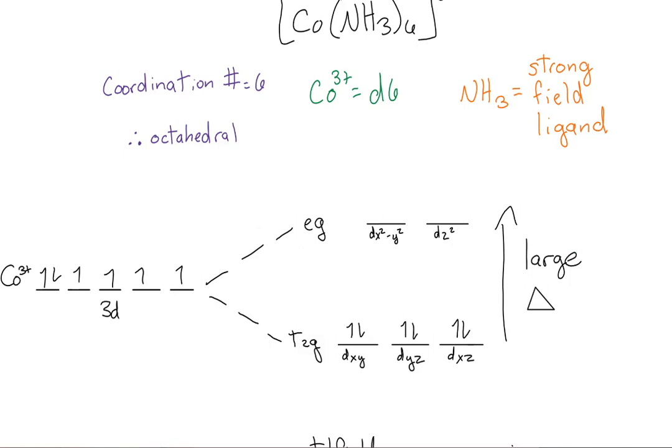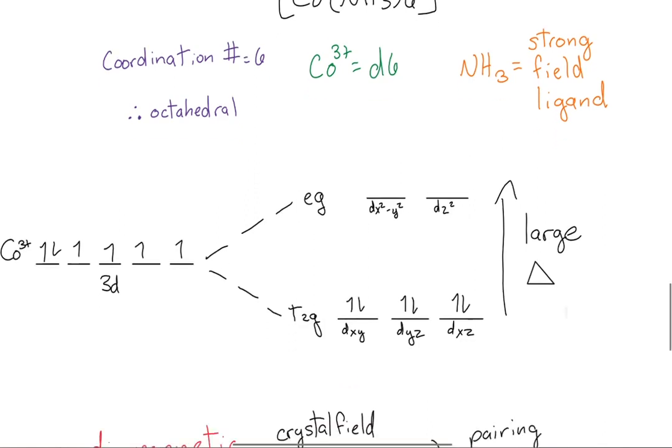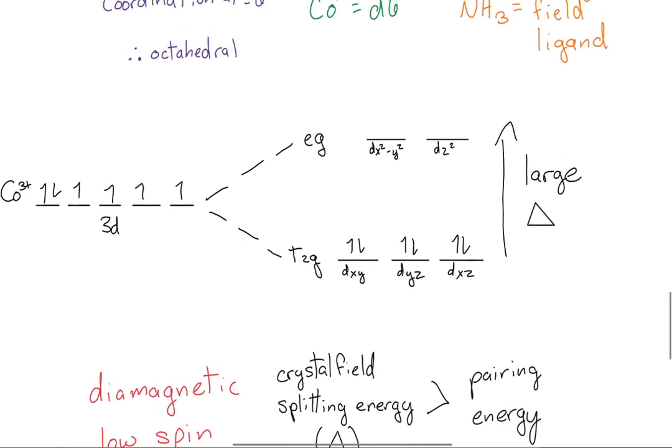With our diagram set up, we can now fill our electrons from bottom to top. The crystal field splitting energy is larger than our pairing energy. So, our electrons do not have enough energy to go from T2G to EG, so they'll just stay in the T2G. And that's it for the crystal field theory diagram.